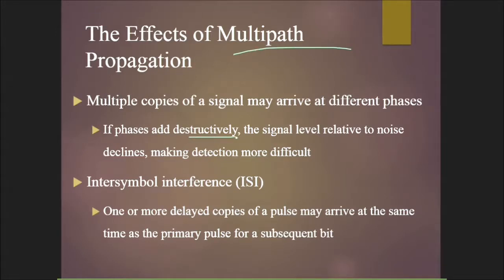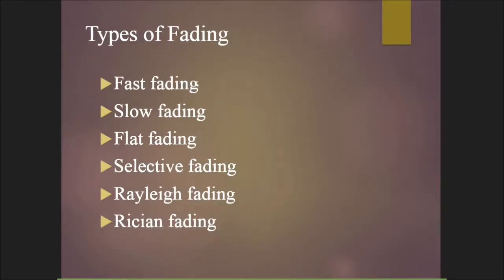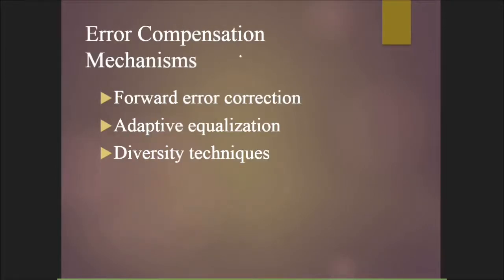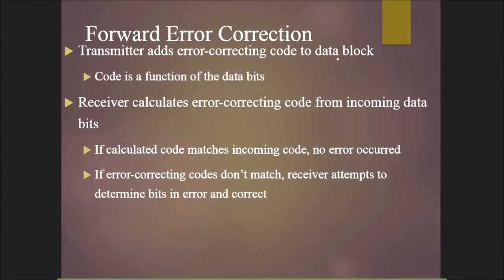If multi-path phases add destructively, the signal level relative to noise declines, making detection more difficult. Inter-symbol interference (ISI) occurs when one or more delayed copies of a pulse arrive at the same time as the primary pulse for a subsequent bit. Types of fading include fast fading, slow fading, flat fading, selective fading, relay fading, and regression fading.